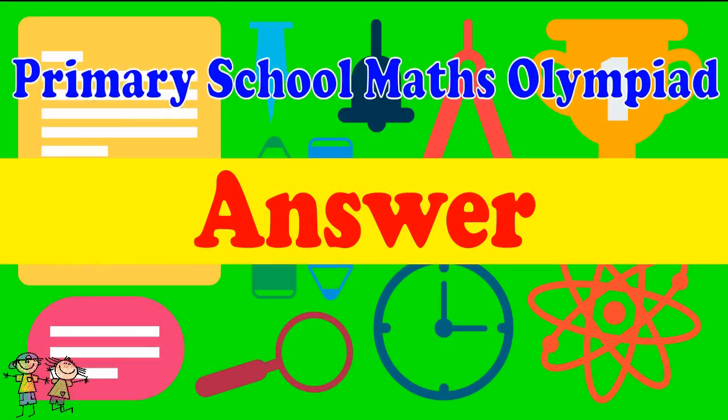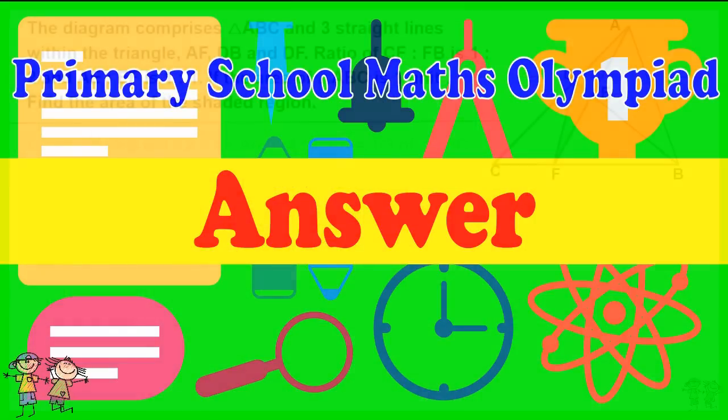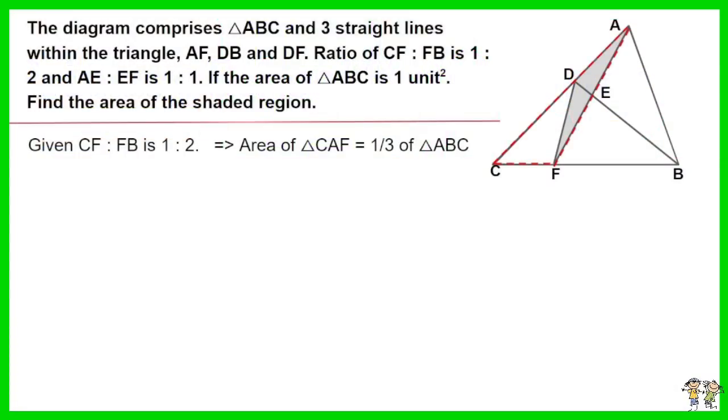Here is the recommended answer. Given the ratio of CF to FB is 1 to 2, thus the area of triangle CAF equals 1 third of triangle ABC.